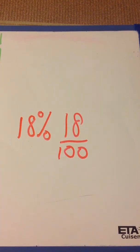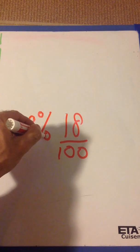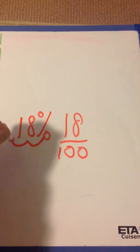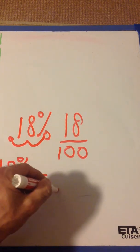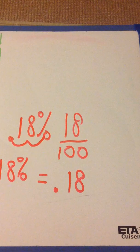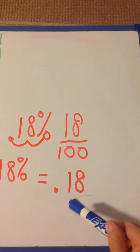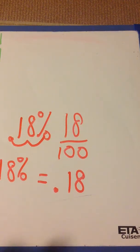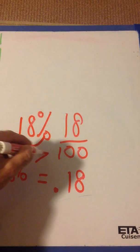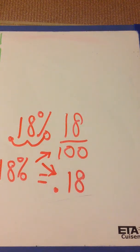I can make a decimal also. All you do is move the percent sign twice. So 18% would also equal 0.18. Once you move the decimal twice, and you only move it twice, get rid of the percent sign. So 18% is 18 over 100, and it's also 0.18.